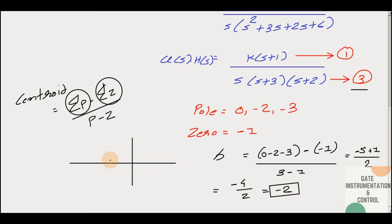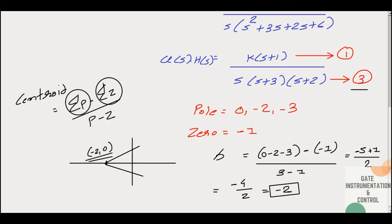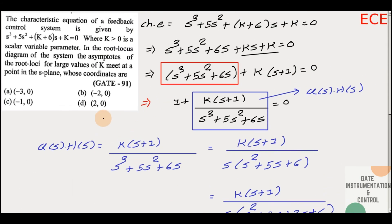So in the s-plane, the point at −2 will be our centroid, and from there our asymptotes will emerge. So the coordinates are (−2, 0). That is the point asked in the question, and our answer is option B.